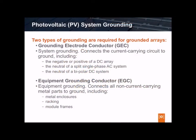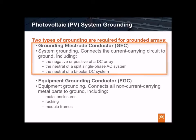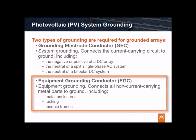Generally speaking, grounded photovoltaic or PV systems have two distinct grounding requirements. The current carrying circuit needs to be grounded with a grounding electrode conductor or GEC — these could include the negative or positive of a DC array, the neutral of a single-phase AC system, or even the neutral of a bipolar DC system. Also, the non-current carrying components of the equipment, such as the module frames, racking, and other metal enclosures, require an Equipment Grounding Conductor, or EGC.